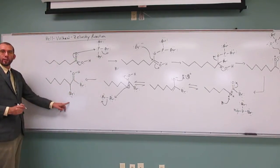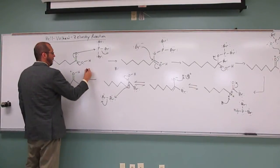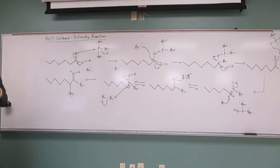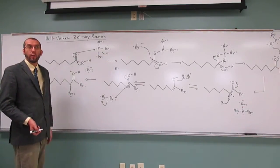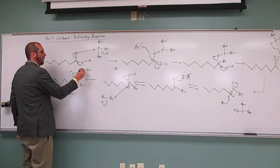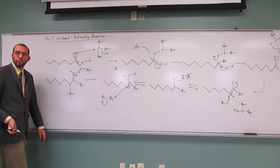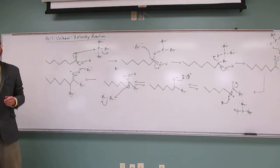So we get alpha bromination, and Br minus. So one of these Br minuses might have been our basis before. So we can think of that Br minus removing that proton like that. Can I erase the top? Has everybody got everything on the top?